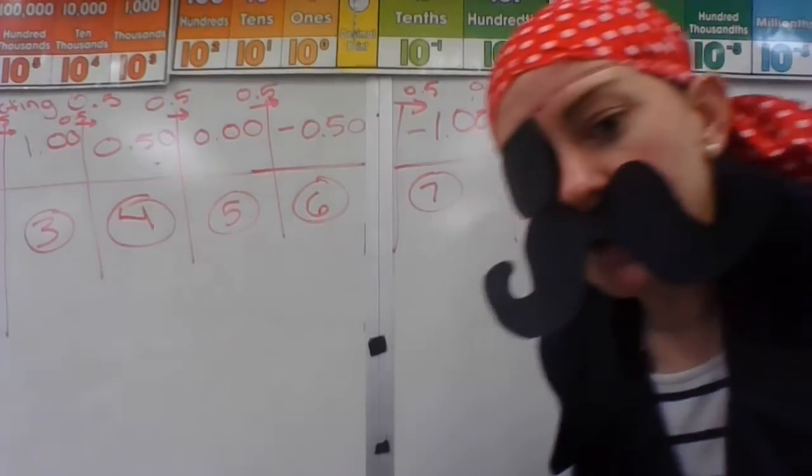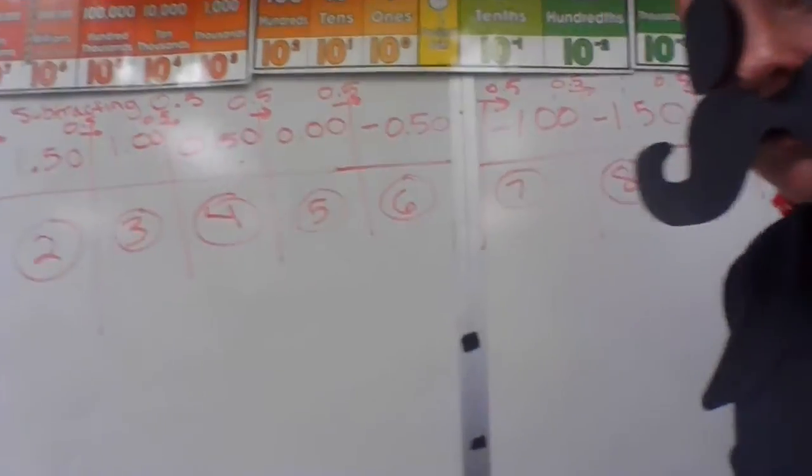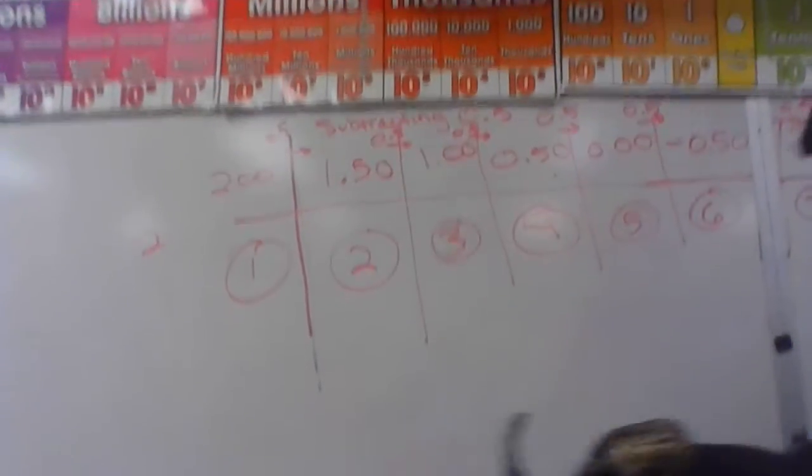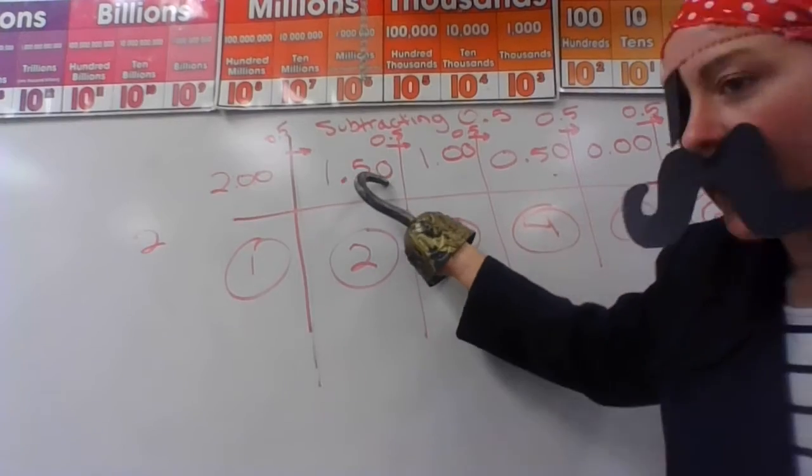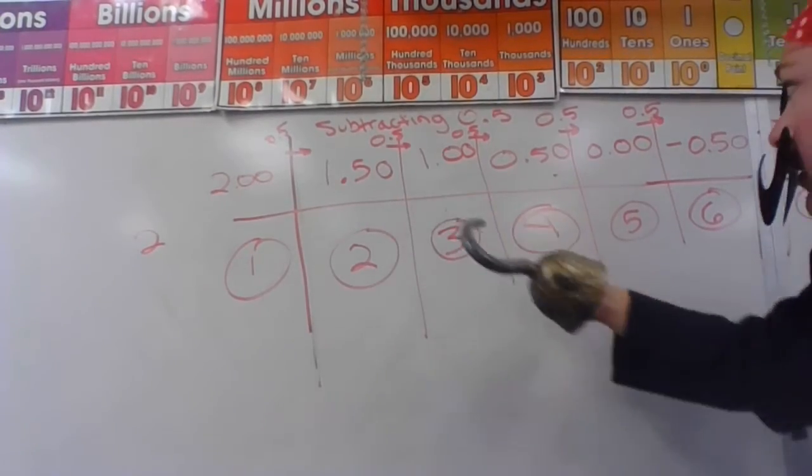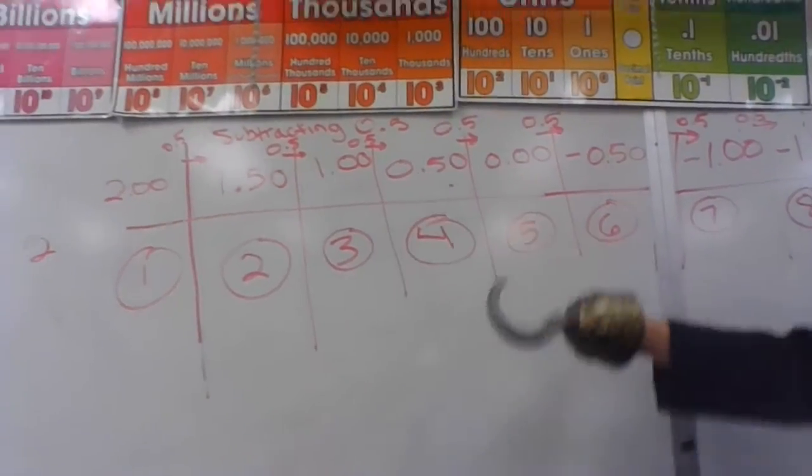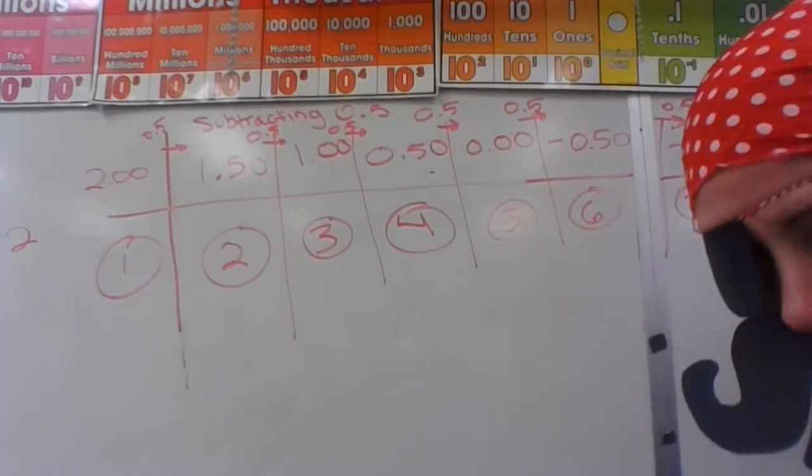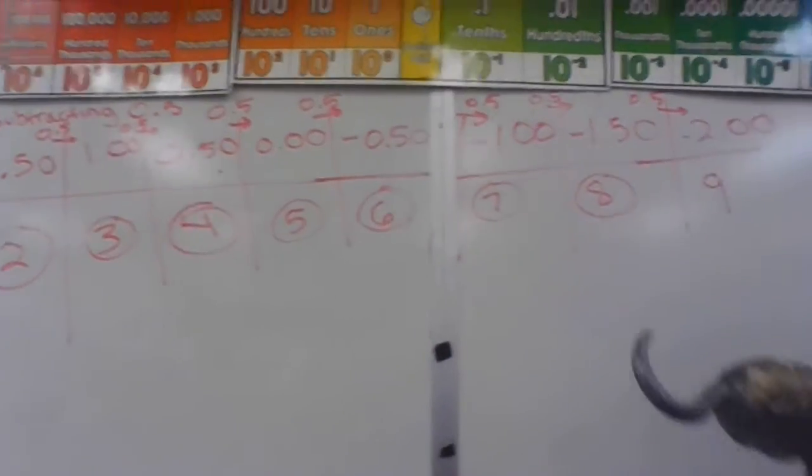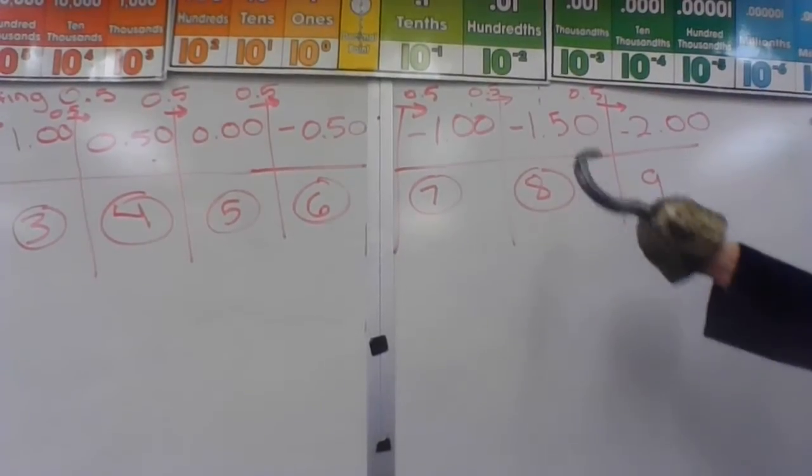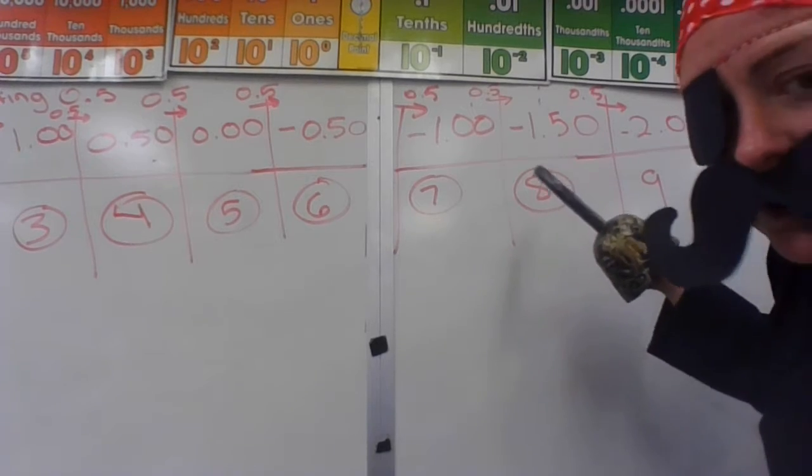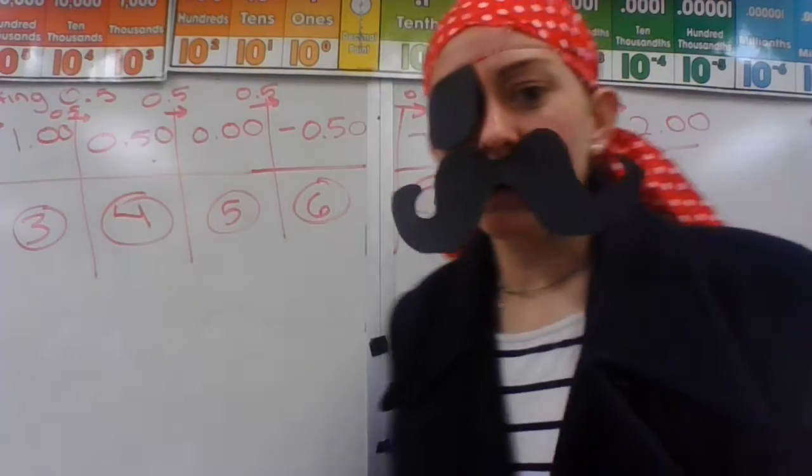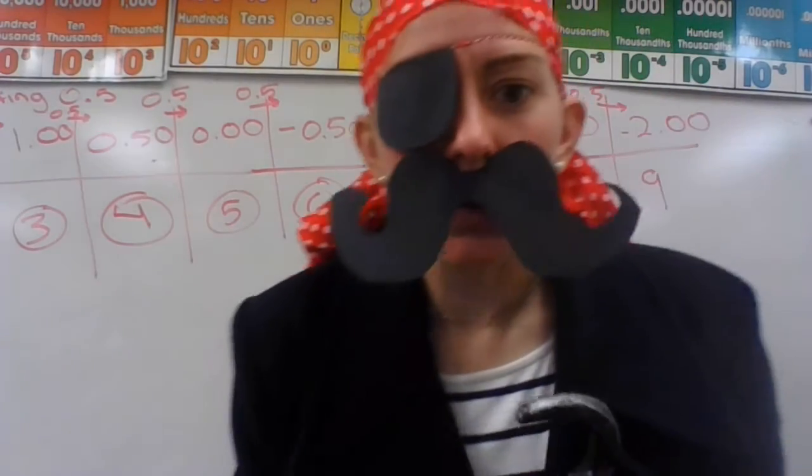Or if you wanted to say it in fancy math terms, we'd have two and zero tenths, one and five tenths, one and zero tenths, zero and five tenths, zero and zero tenths, negative five tenths, negative one and zero tenths, negative one and five tenths, and negative two and zero tenths. Man, that was invigorating. Let's do one more.